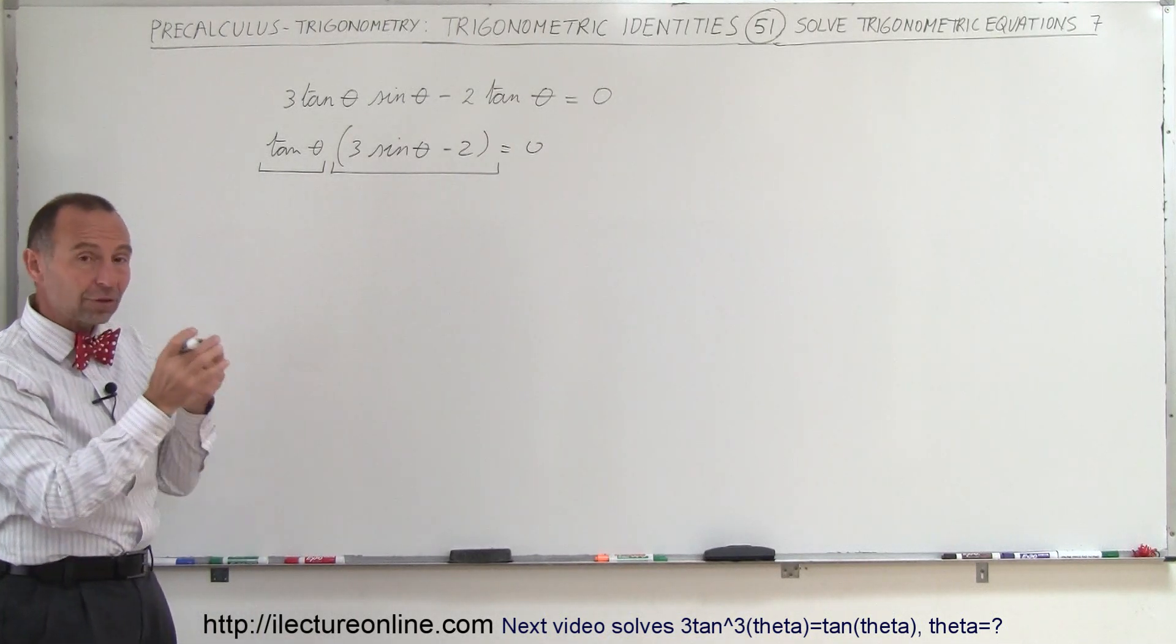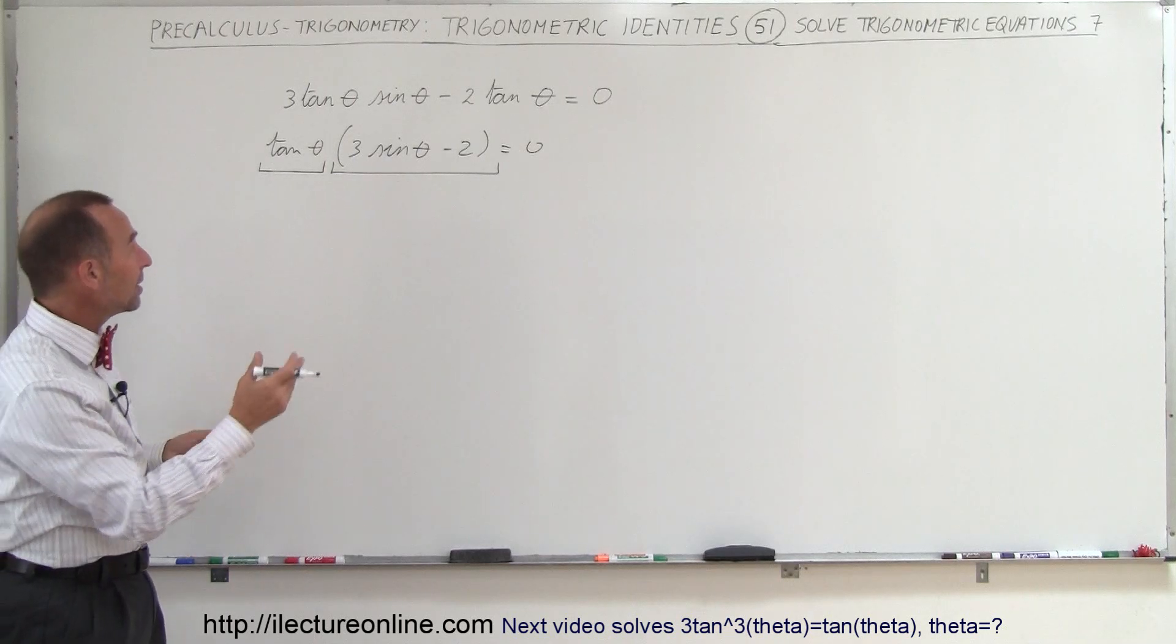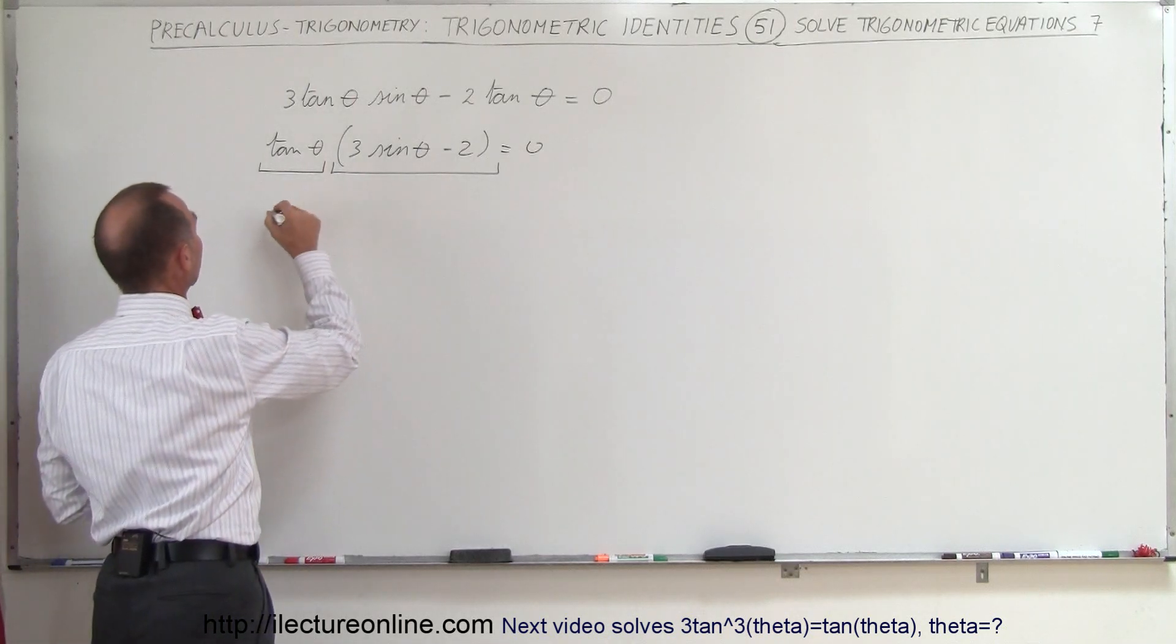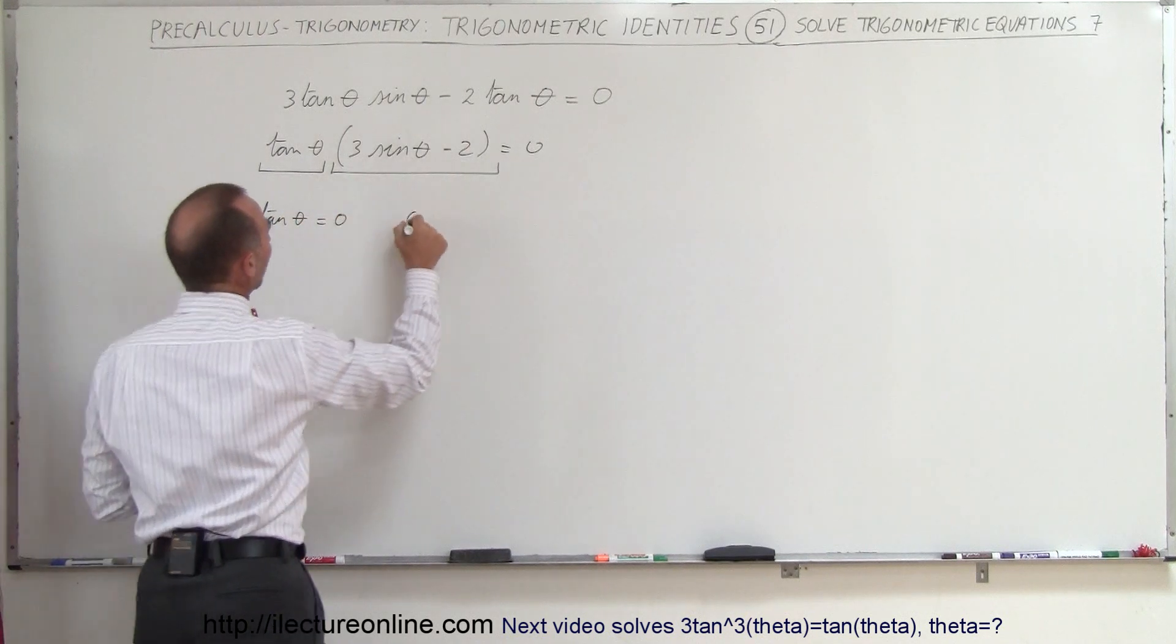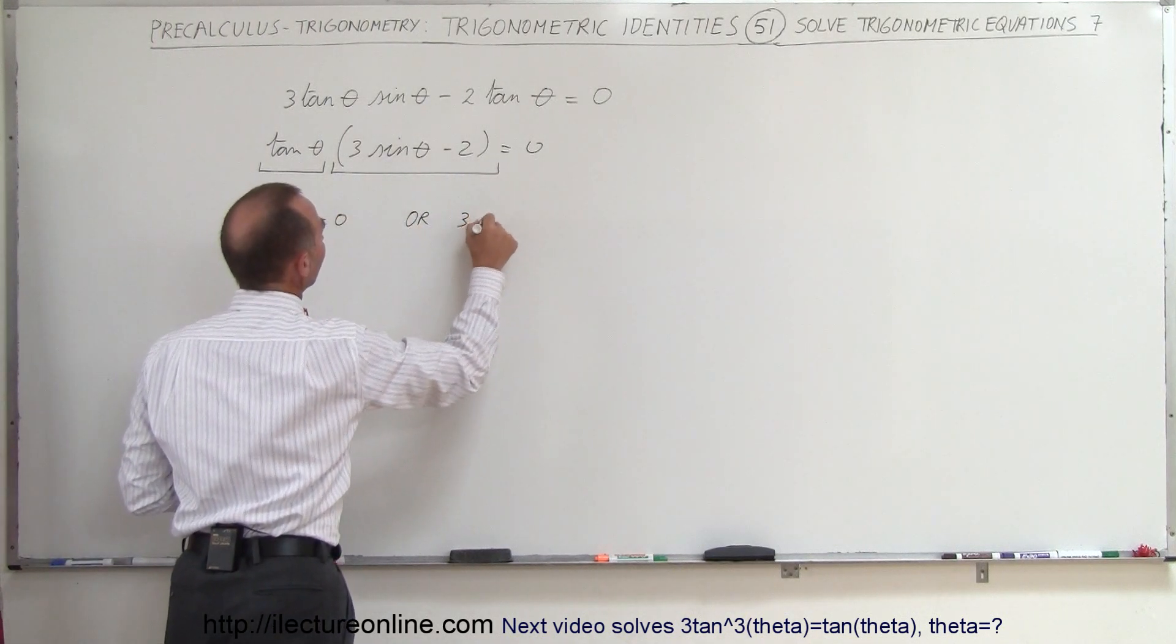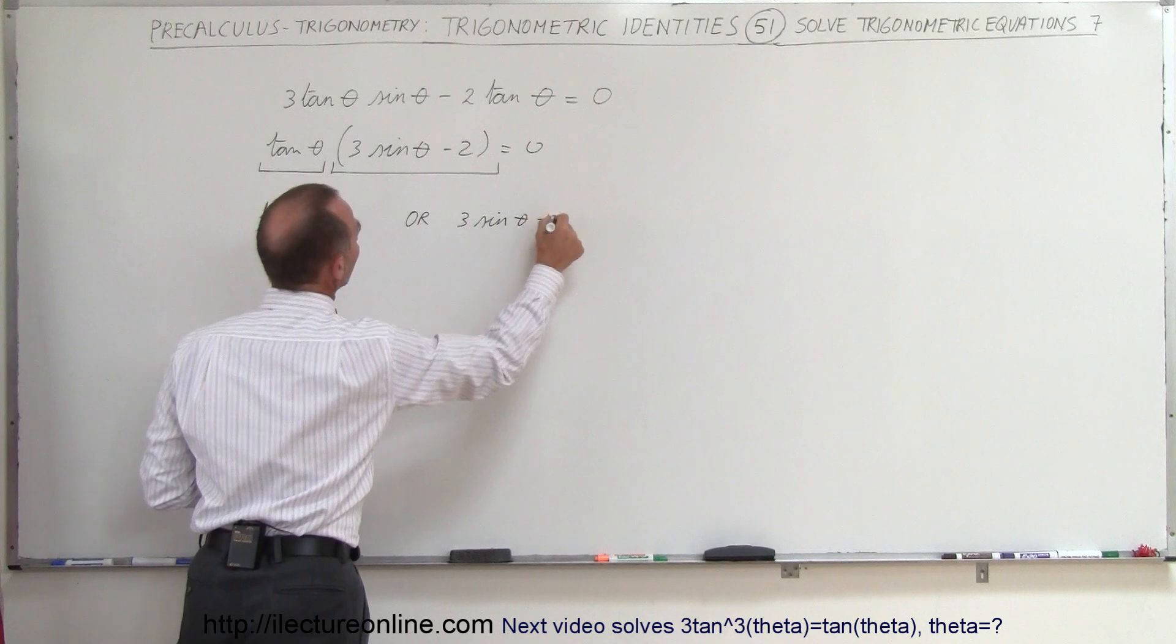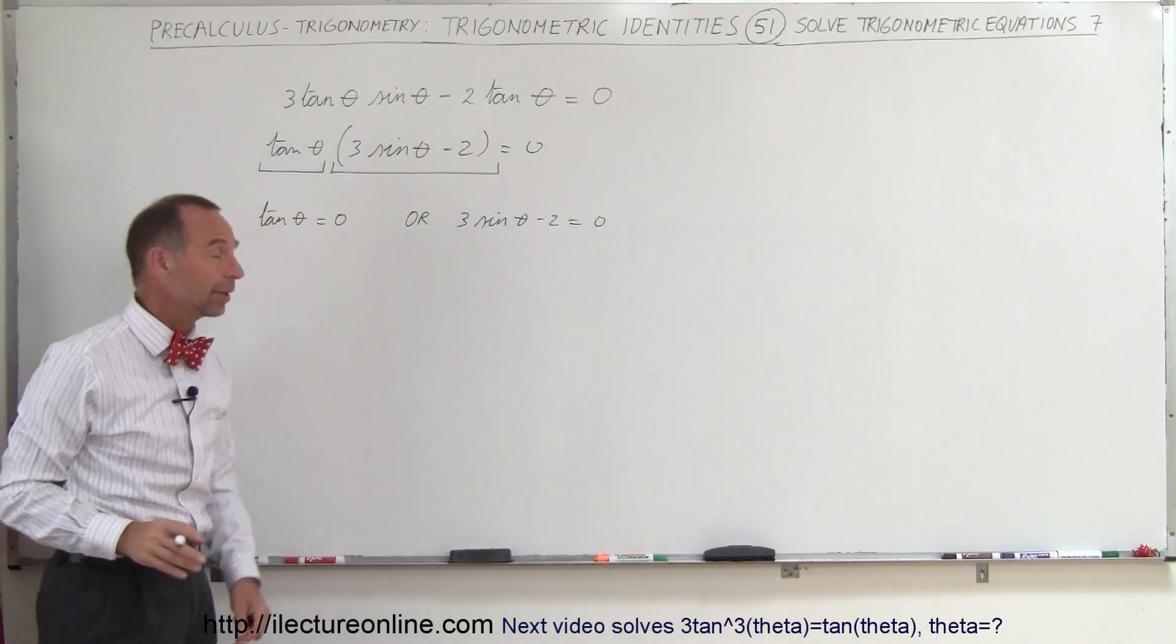If a product, if two things multiply together is equal to zero, that means either one or the other is equal to zero. So we can say that the tangent of theta is equal to zero or three times the sine of theta minus two is equal to zero, and then we solve those two equations separately.